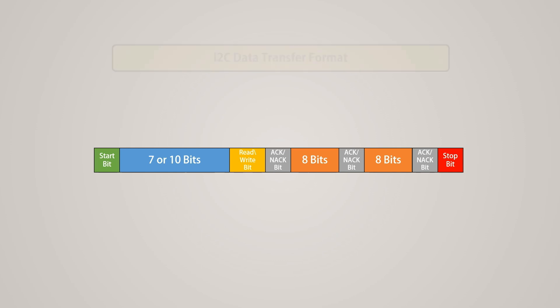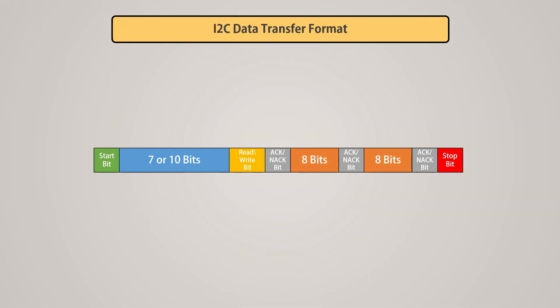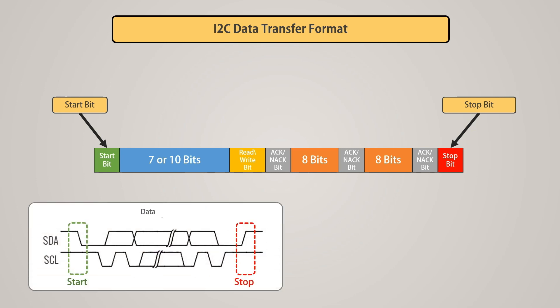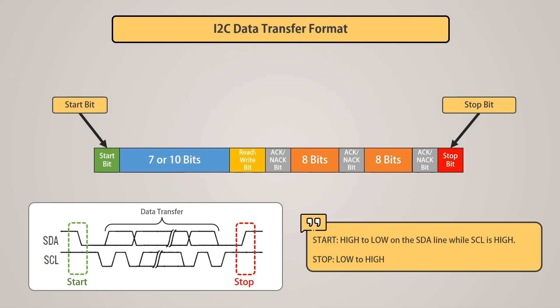The data transfer format of the I2C protocol is divided into 5 segments: start and stop bits, address, read or write bit, acknowledge bit, and data frames. All I2C transactions begin with a start and are terminated by a stop. For the start condition, a high-to-low transition occurs on the SDA line while SCL is high. For the stop condition, a low-to-high transition occurs on the SDA line while SCL is high.